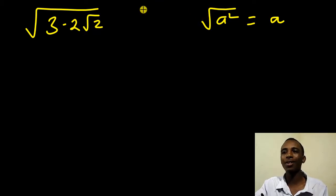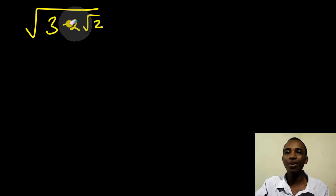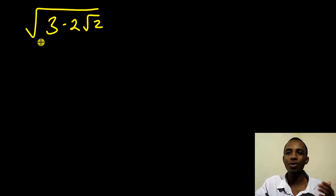So they just cancel out. The easiest way to find the square root of 3 minus 2 root 2 is to somehow express this in form of the perfect square. So if you look at this, it actually matches the perfect square that is of the form x minus y squared.